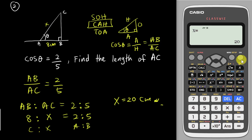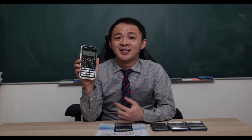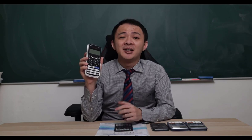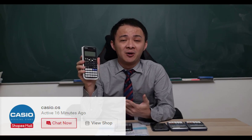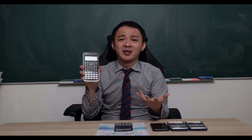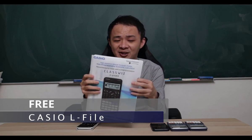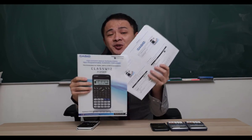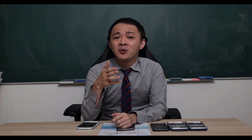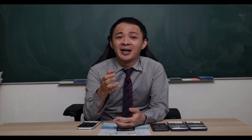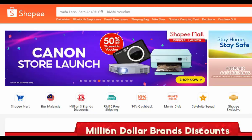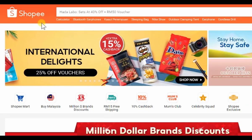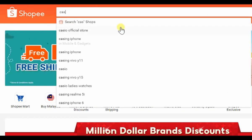That's how to use the ratio function in this calculator. I hope you find this video helpful. If you're interested in getting this calculator, I'll share a Shopee link in the description below, which will bring you to the Casio official store. Currently Casio Malaysia is running a promotion: whoever buys from their official store will receive a free Casio L file — a plastic file where you can insert papers.